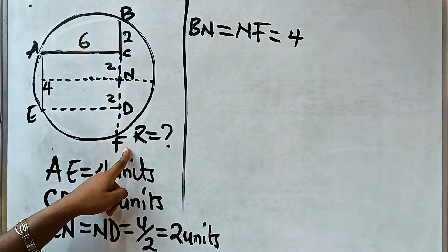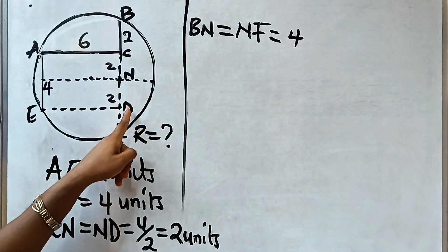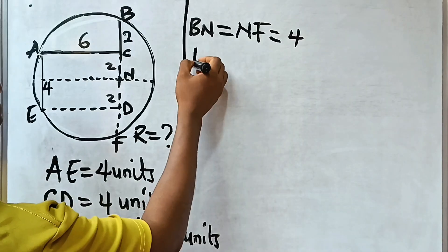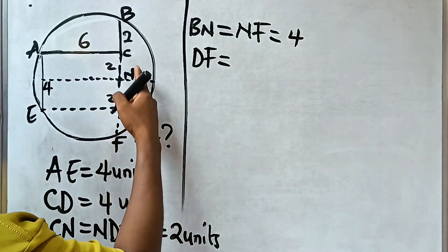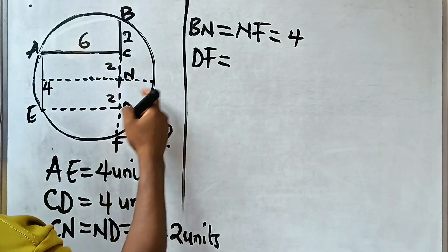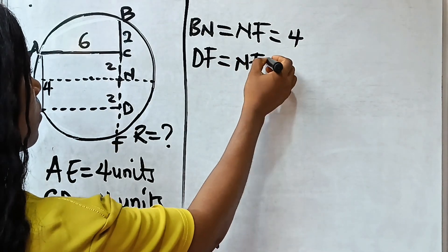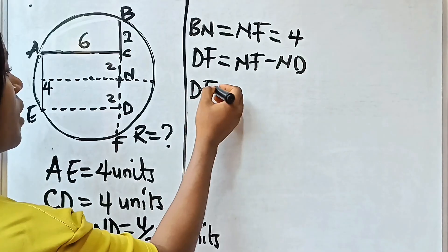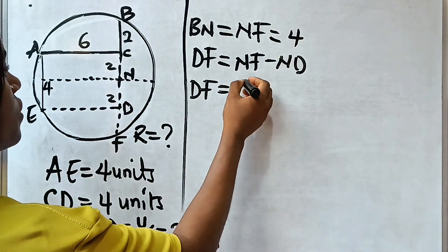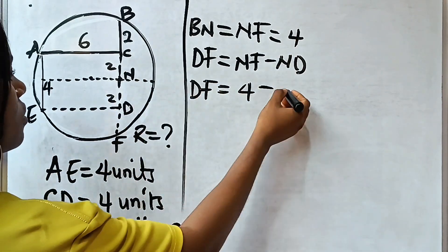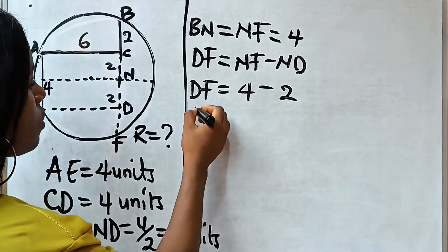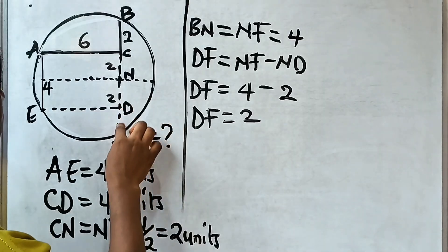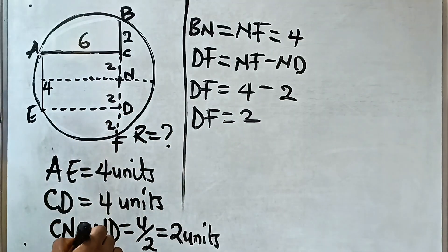Now, because we have NF to be equal to 4, and ND is just equal to 2, DF should be equal to NF minus ND. So DF will be equal to NF is 4 minus ND is 2. So it simply means that DF is equal to 2. This particular point now, DF is also equal to 2.